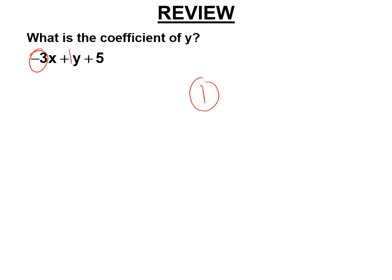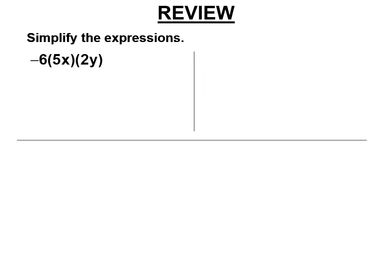The letters are called variables. The whole thing is called an expression. And in that expression, there are three terms. Negative 3x, y, and 5.